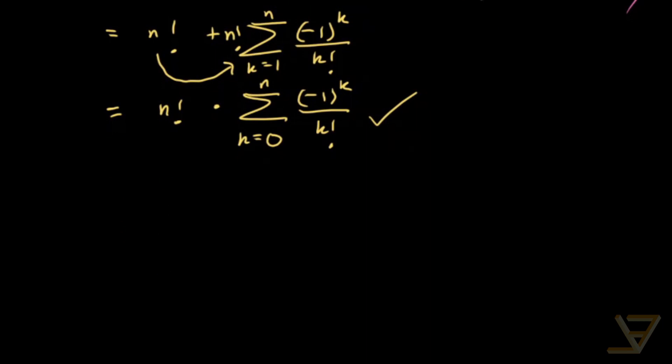Now I want you to notice that we have a factor of n factorial outside. So that means the fraction of derangements, we divide by n factorial because that's the total number of bijections.